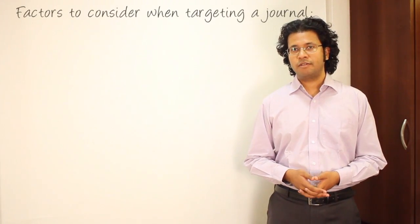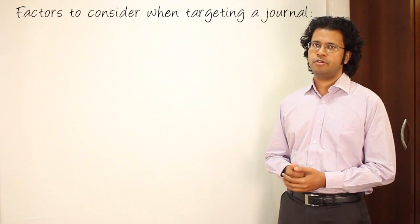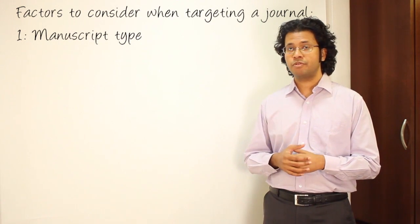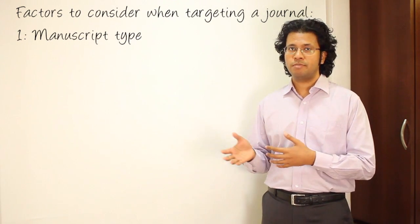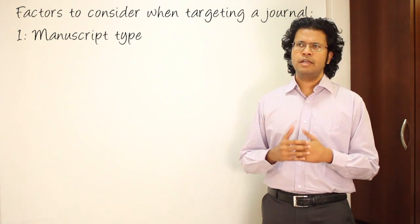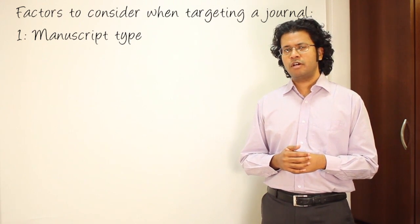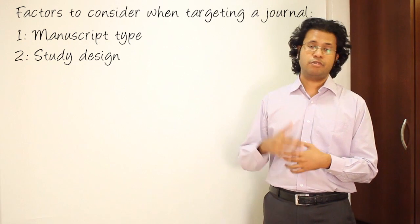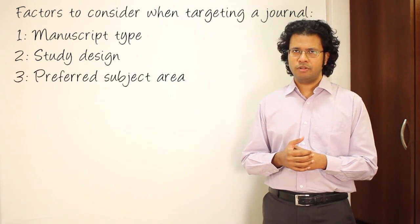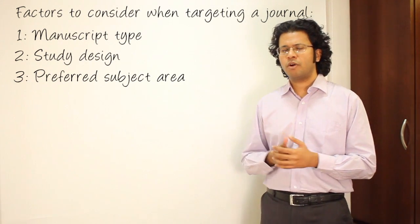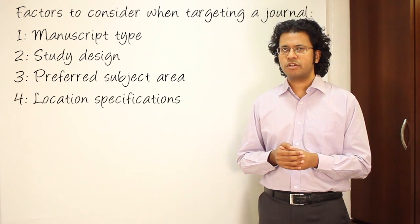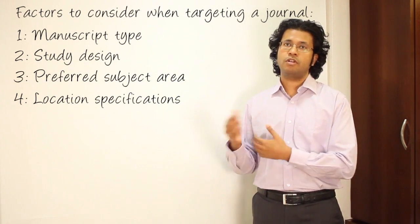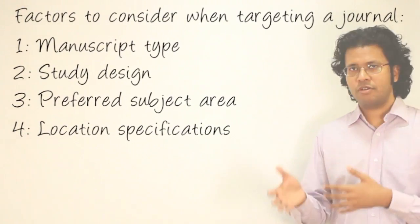Let's look at some of the important factors to consider when you're targeting a journal. One of the first factors is the type of your manuscript — whether that is acceptable to the journal. Journals publish manuscripts of different types: original articles, case studies, review articles. Then you need to look at whether the journal prefers a certain study design and whether your paper matches what they expect. The third factor is the preferred subject areas of the journal. There is one more factor often not considered by authors, and that is the location where your research was conducted. Sometimes journals may want to publish work done in certain countries or contexts, like developing countries or Asian countries.